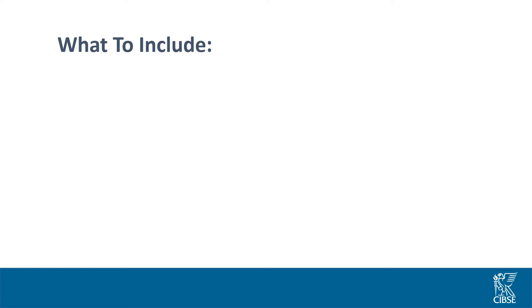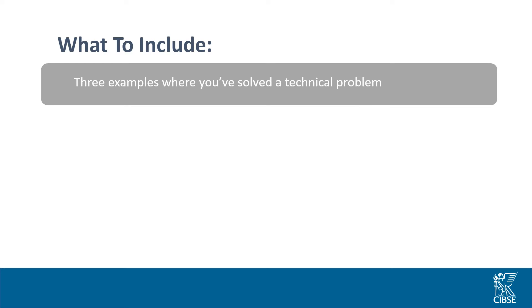Here's a brief overview of what is required for the written report. You'll need to give three examples where you solved a technical problem. You'll explain your role and how you selected the appropriate techniques, procedures and methods used, how any findings or recommendations were made, your role in relation to your employer, any clients or suppliers, and what you did to ensure the safety of people, equipment or data.